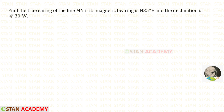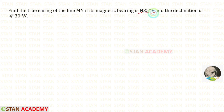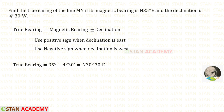Let us see one more problem. Find the true bearing of line M1 if its magnetic bearing is north 35 degrees east and the declination is 4 degrees 30 minutes west. Since this angle comes between north and east, there is no need to convert into whole circle bearing because the whole circle bearing is also 35 degrees. We use the negative sign since the declination is west. 35 degrees minus 4 degrees 30 minutes gives us north 30 degrees 30 minutes east.